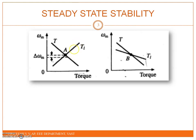Here we will be considering a small decrement in speed, delta omega M. At the new speed, we analyze the resulting change in motor torque and load torque to determine whether the system returns to equilibrium.